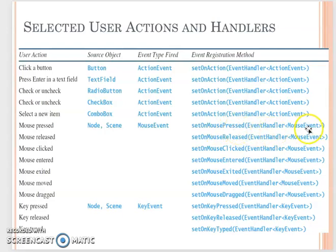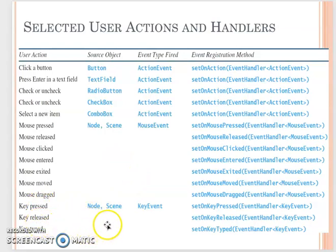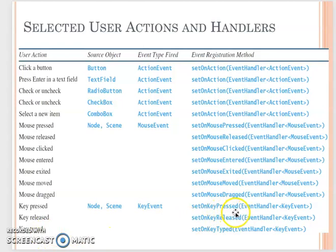The set-on-mouse methods to register the event handler include press, release, click, enter, or exit. The handler is still an event handler, but the active event is called mouse event. Similarly, when you have a key press within a node or scene, that event is called a key event. The key can be pressed, released, or typed, so you need to use different register methods to register your event handler.